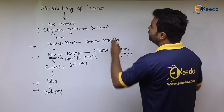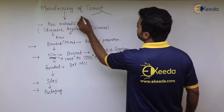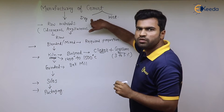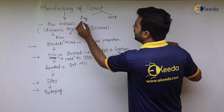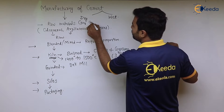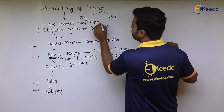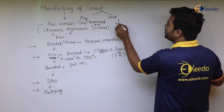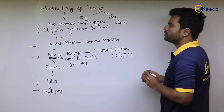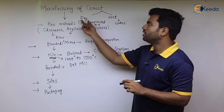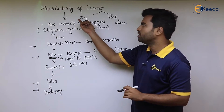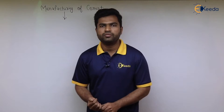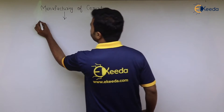There are two different procedures: dry process and wet process of cement manufacturing. In the dry process, compressed air is used, and in the wet process, water is added during manufacturing.